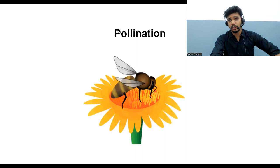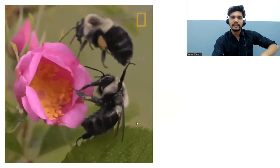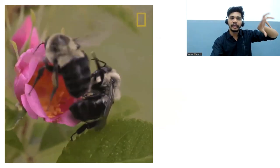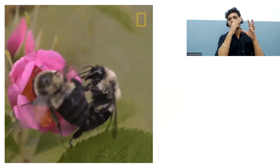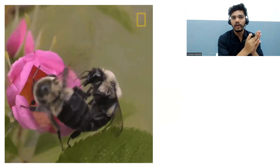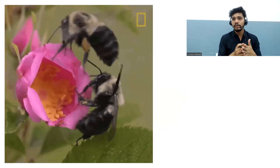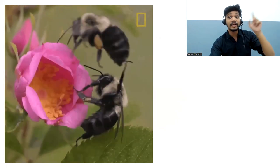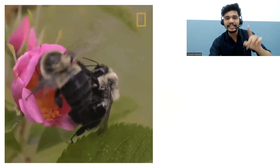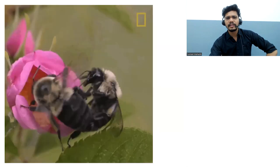These bees collect nectar as food, but pollen grains stick to the body of the bees. As the bees roam from one flower to another — many flowers — they are responsible for the transfer of pollen grains, which are the male gametophyte found inside the anther.